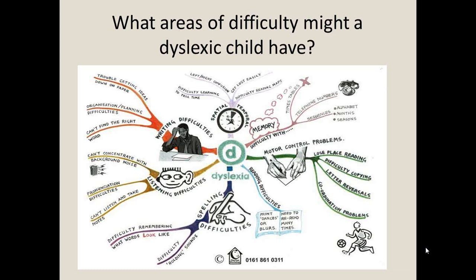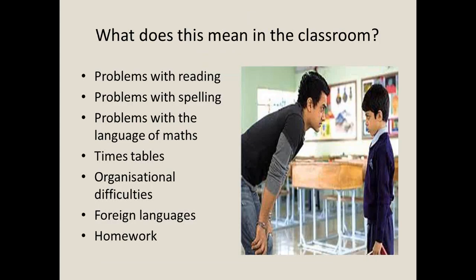Some children staring out of the window may actually be using that as a strategy to centre themselves. They may have motor control problems — particularly if they've got dyspraxic-type difficulties — affecting handwriting or physical coordination. They can have tracking difficulties, losing their place on a line of text very easily. They have problems with sequencing — they can't say the alphabet in order, don't know the months of the year, which means using a dictionary is very difficult. As a teaching assistant, you're there to interpret what the teacher has said to the whole class for the child you're working with.